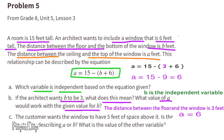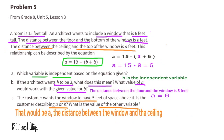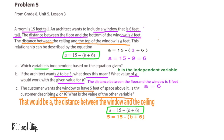The distance between the top of the window and the ceiling would be 6 feet when the distance between the bottom of the window and the floor is 3 feet. Part c: The customer wants the window to have 5 feet of space above it. Is the customer describing A or B? The customer is describing A, the distance between the window and the ceiling. A is 5, so the equation reads 5 equals 15 minus B plus 6.